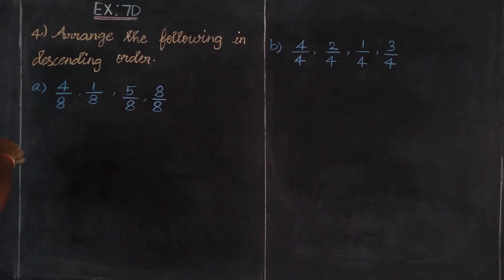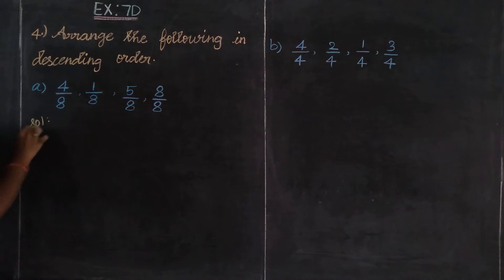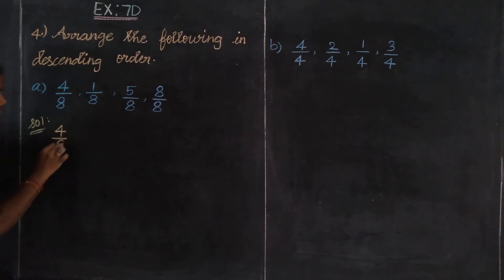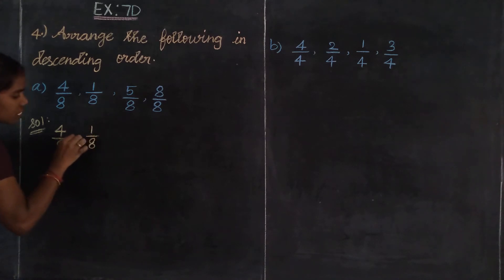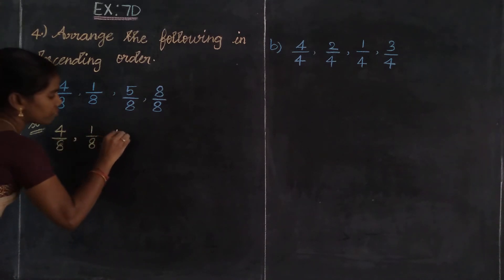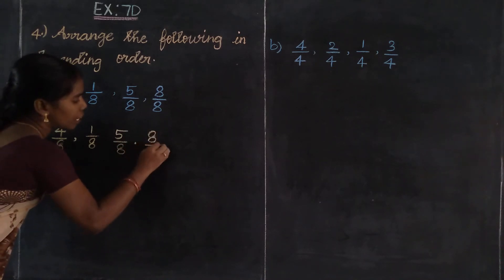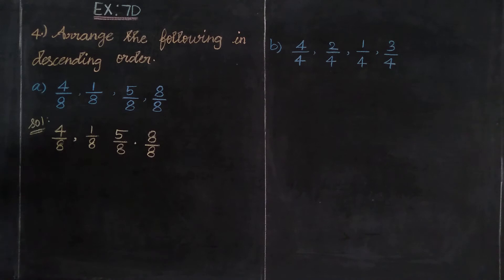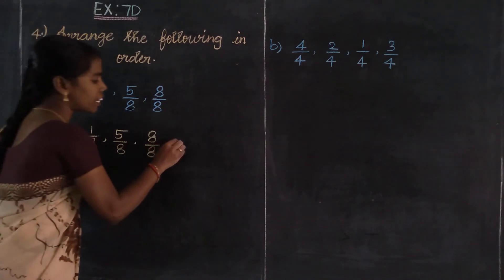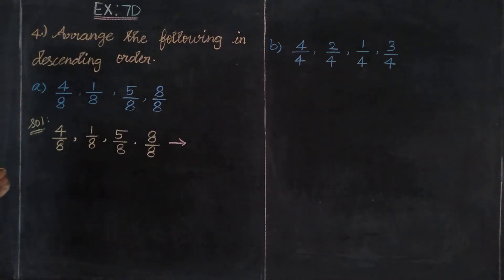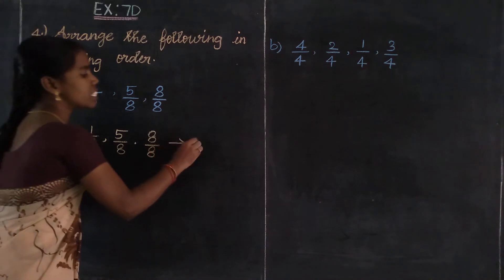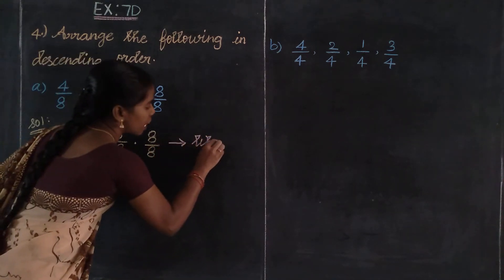Now the solution. The first number is 4 divided by 8, second number is 1 divided by 8, third fraction number is 5 divided by 8, and the 4th fraction number is 8 divided by 8. Is it a like fraction or unlike fraction? Yes, this is a like fraction — because all 4 fractions have equal denominator values.